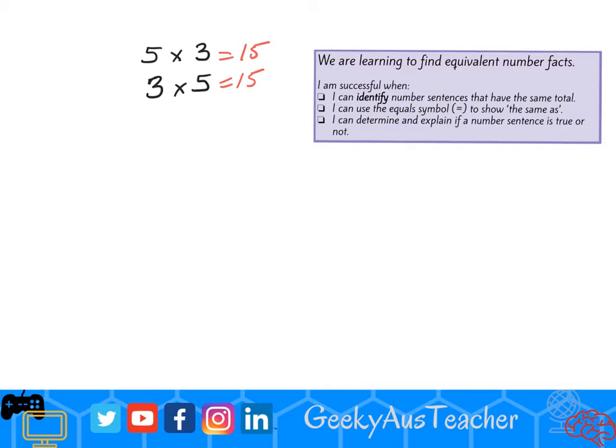I have identified that they have the same total. Now I need to look at using the equals symbol. I can say 5 times 3 equals 3 times 5 because they have the same total. This equals symbol shows that 5 times 3 is the same as 3 times 5.